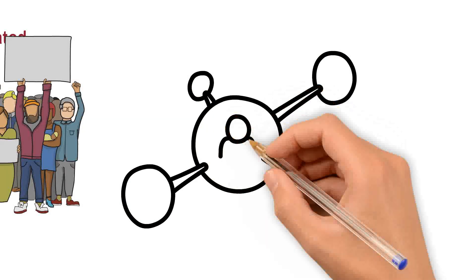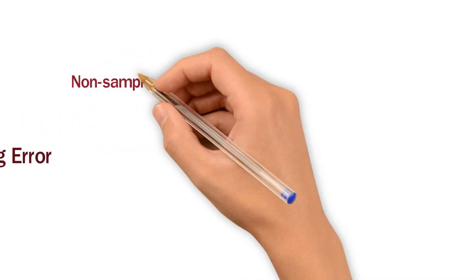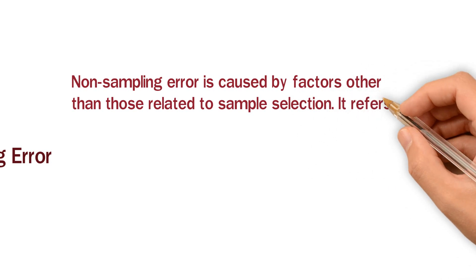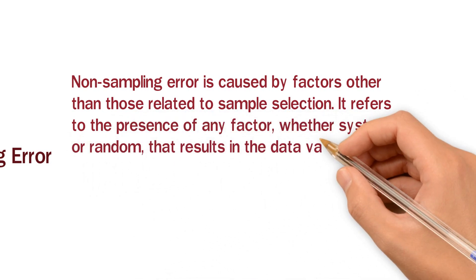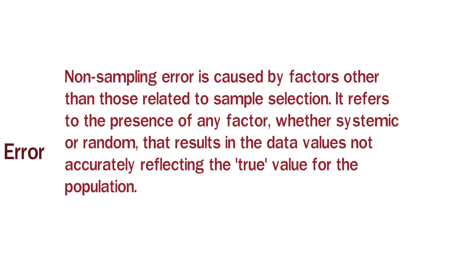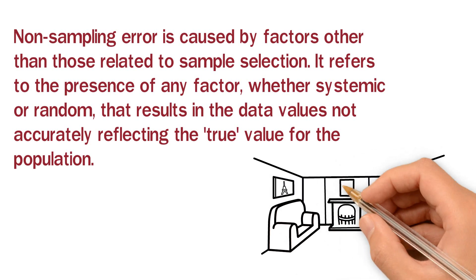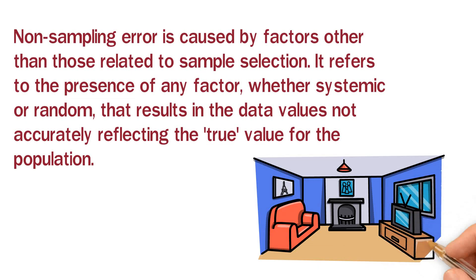Up to here we have talked about sampling error. Now we move towards non-sampling error — what is non-sampling error? Non-sampling error is caused by factors other than those related to sample selection. It refers to the presence of any factor, whether systematic or random, that results in the data values not accurately reflecting the true value for the population. Non-sampling error includes all those factors that are not included in sampling error.